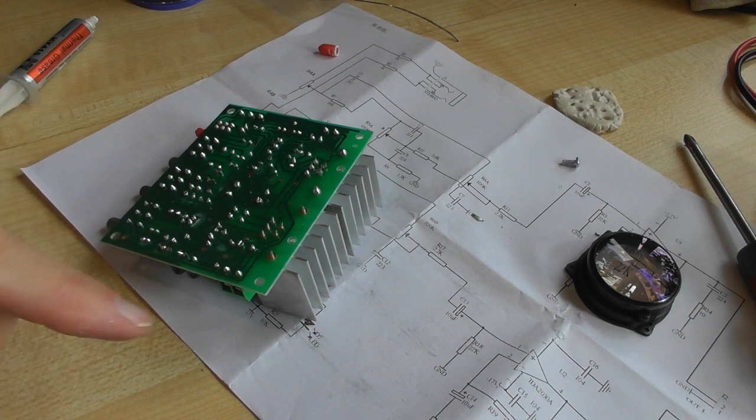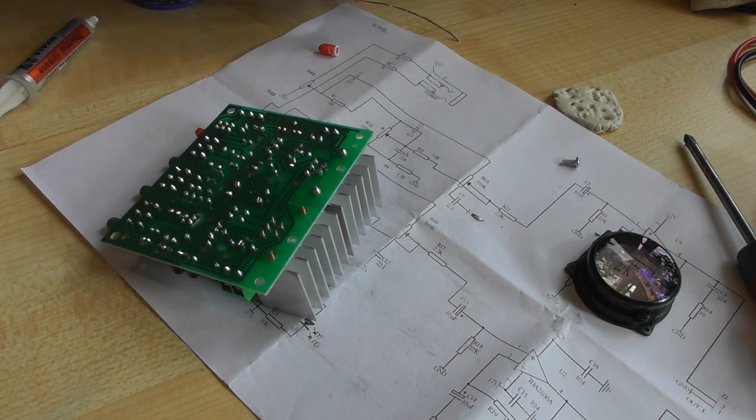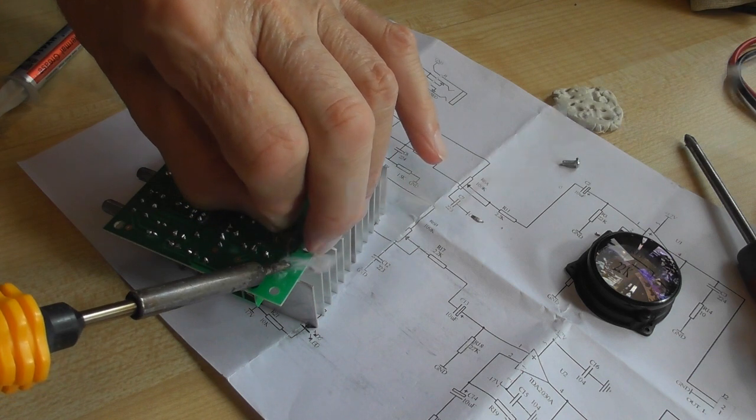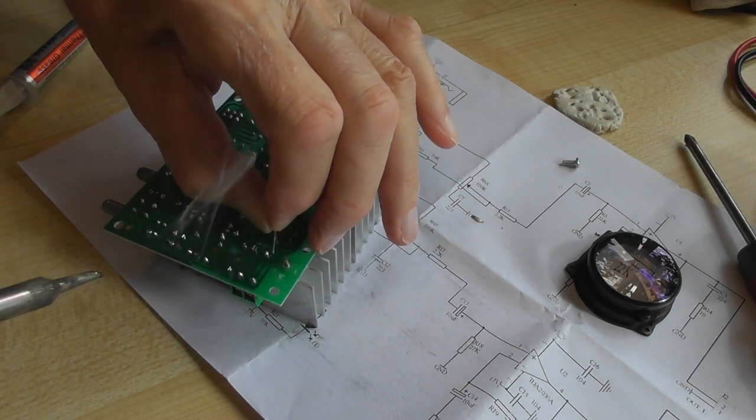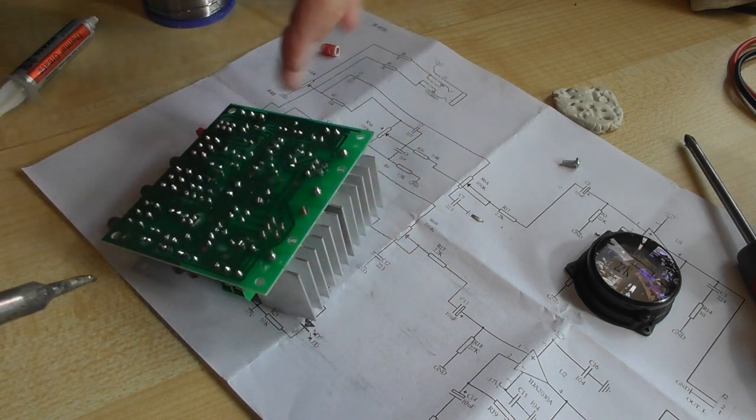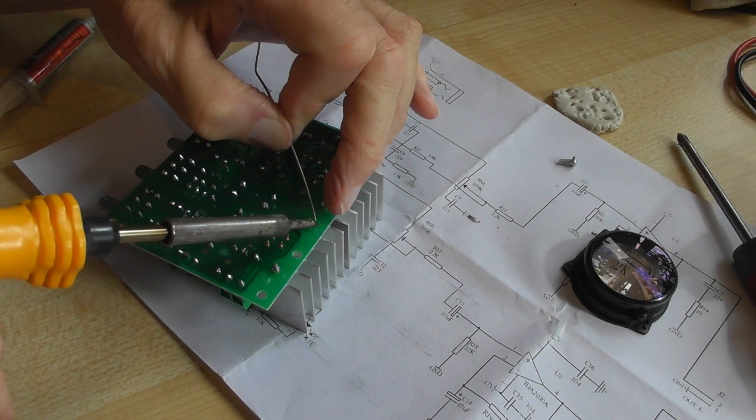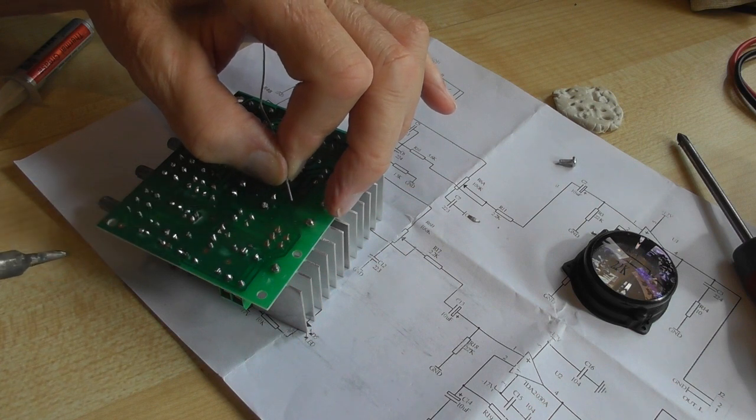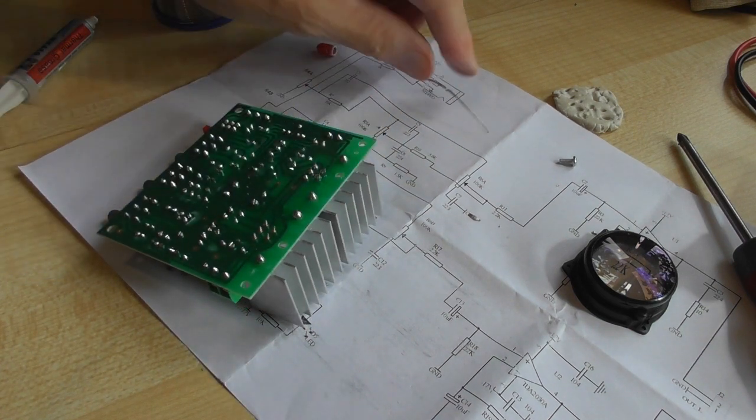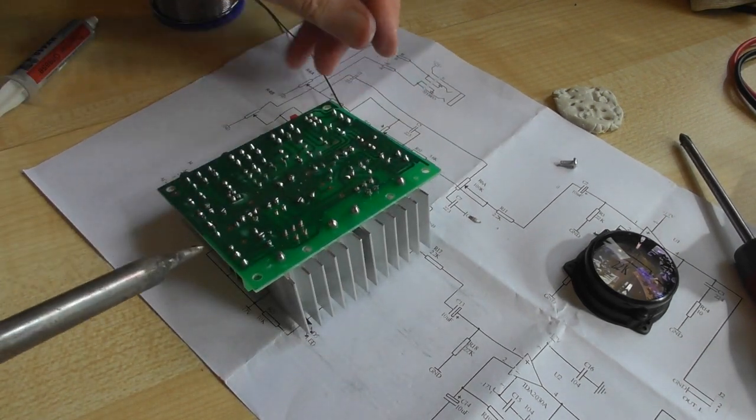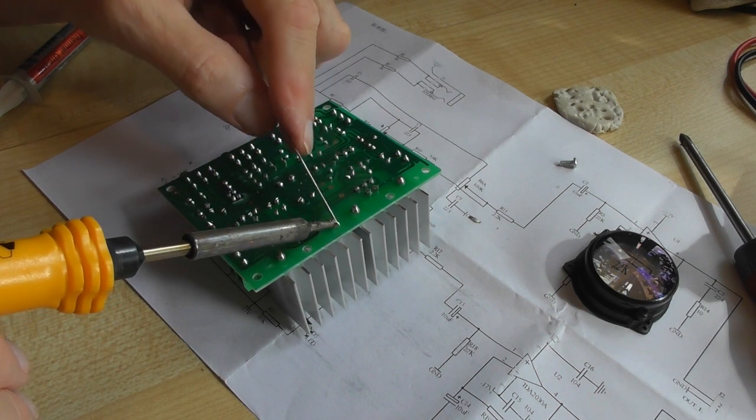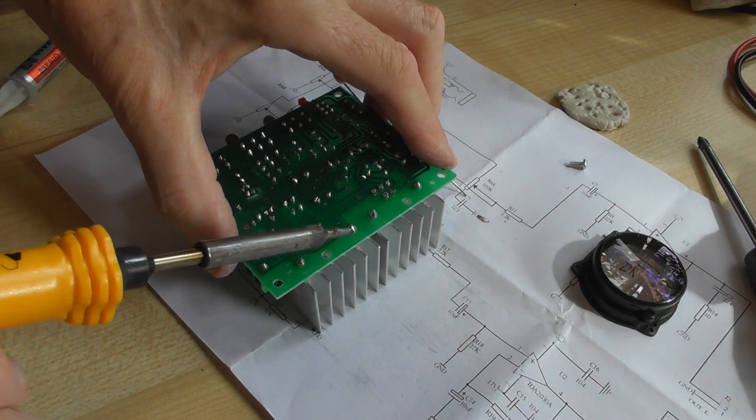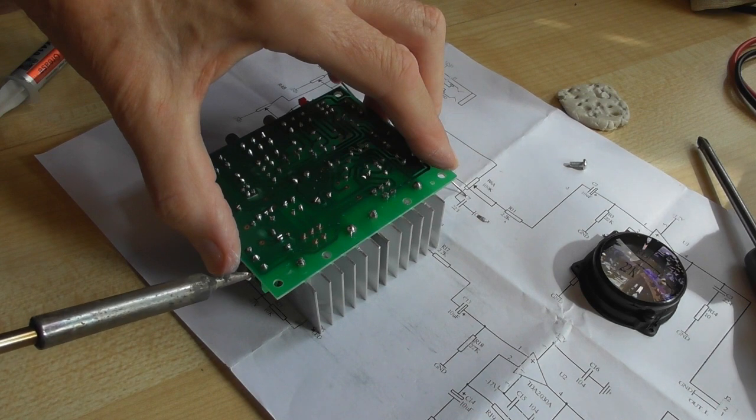Now we need to solder the heat sinks on, holding it down flush because we don't want the heat sink to be at an angle. Same with the pins on the other side - this takes quite a bit of heat because obviously it's a heat sink. That first one's good but the second one is less than good, so I'll do that again. It sucks all the heat away from the iron, that's the problem. That's better, that looks good.